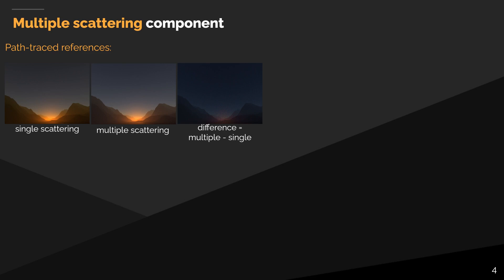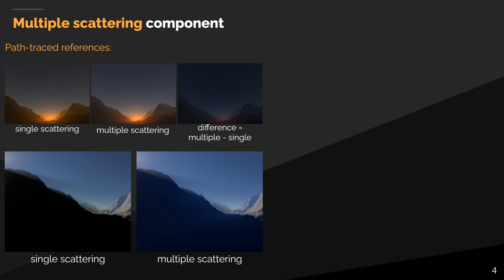We cannot take pictures of the real world with and without this phenomenon, so here are some artificial examples achieved using path tracing. You can see that on Earth during sunset, it is critical to simulate multiple scattering to achieve believable results and avoid a yellowish atmosphere look. At the bottom, images show that multiple scattering is important for the light to fill up the space between the camera and landscape when inside a volumetric shadow — in this case, the result of light scattering around mountains.